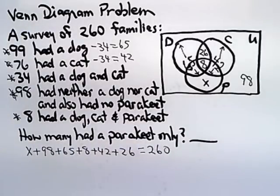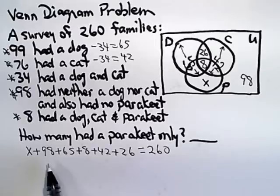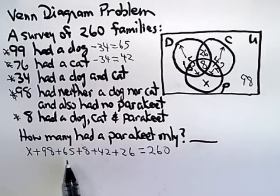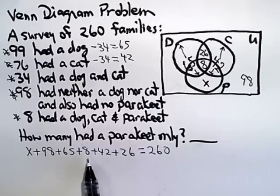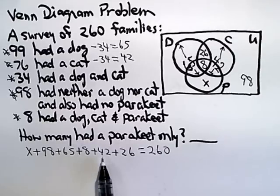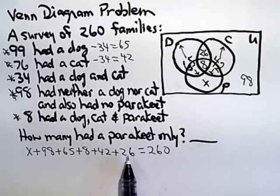So, I just want to add up those numbers, and I could probably do it in my head, not too bad. But if I do want to use a calculator, and I think I will here, just so I won't make a mistake on camera, I take 98 plus 65 plus 8 plus 42 plus 26 equals.